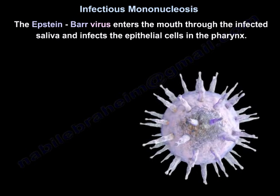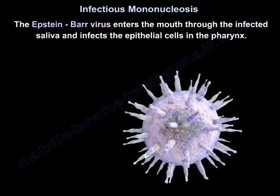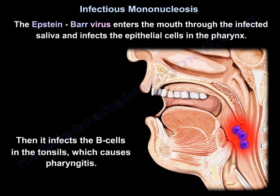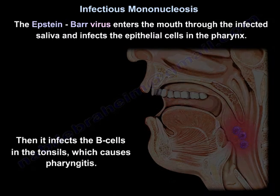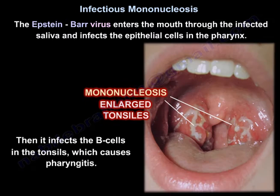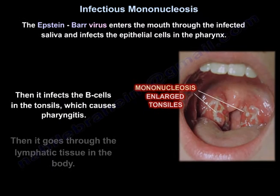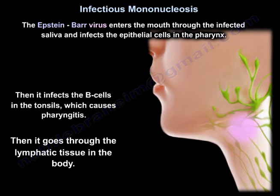The Epstein-Barr virus enters the mouth through infected saliva and infects the epithelial cells in the pharynx. Then it infects the B cells in the tonsils, which causes pharyngitis, and then it spreads through the lymphatic tissue in the body.